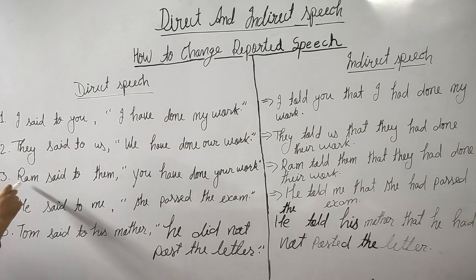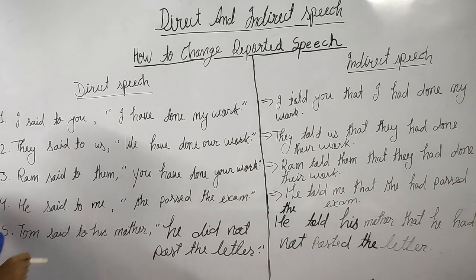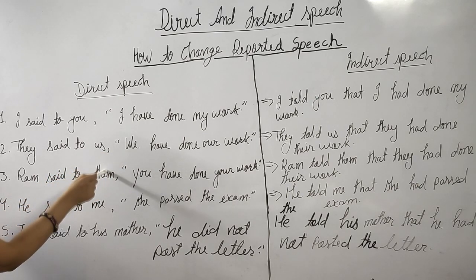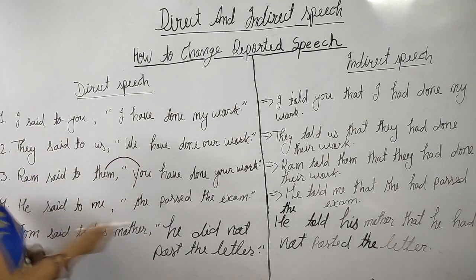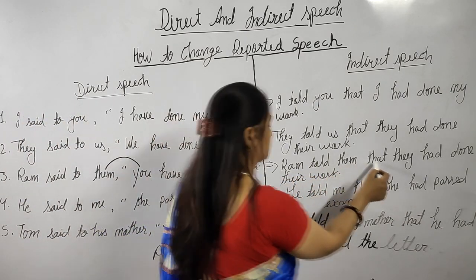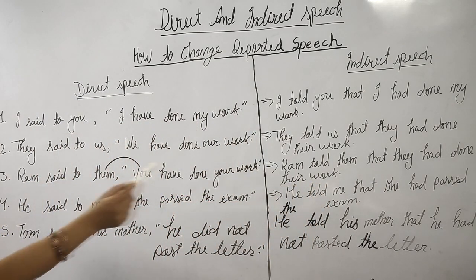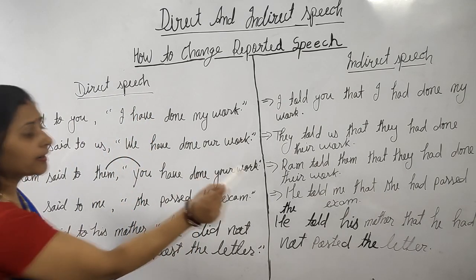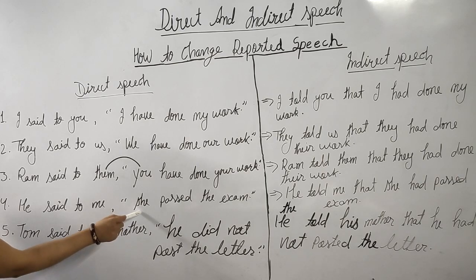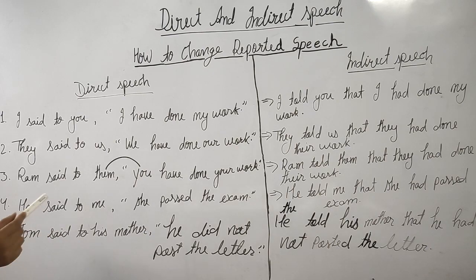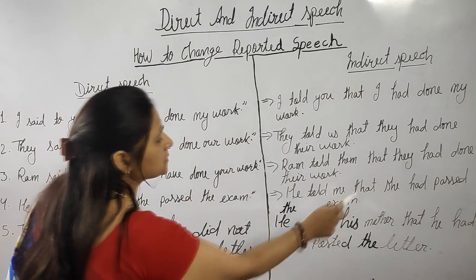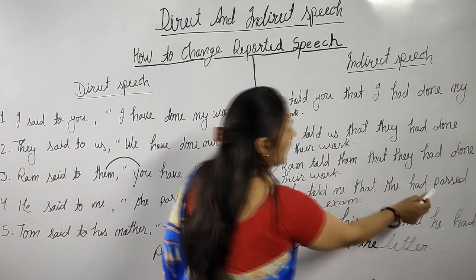Again, look at the next example. Ram said to them, 'You have done your work.' As you can see, 'you' is the second person, so 'you' will be changed according to the object of the reporting word. Then: Ram told them that they had done their work — 'you' is changed into 'they.' Now look at the next example. He said to me — if the reported speech begins with the third person, we don't need to change the subject of the reported speech. In that way: he told me that she had passed the exam.